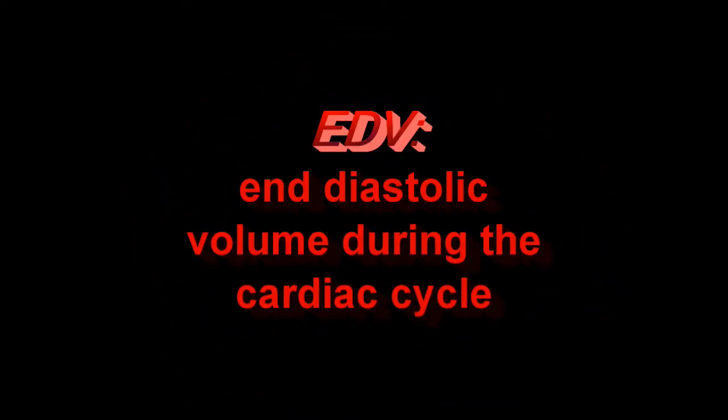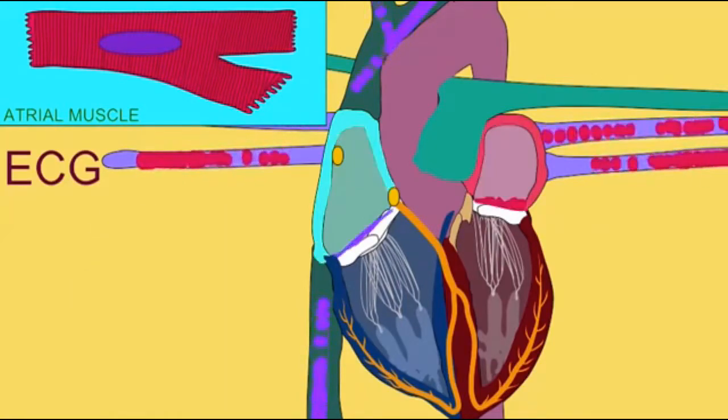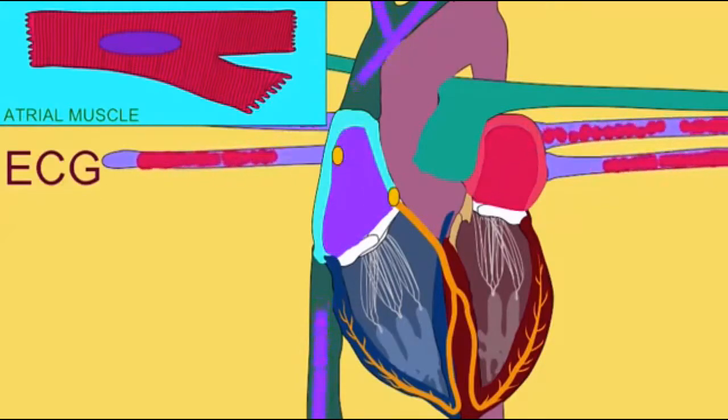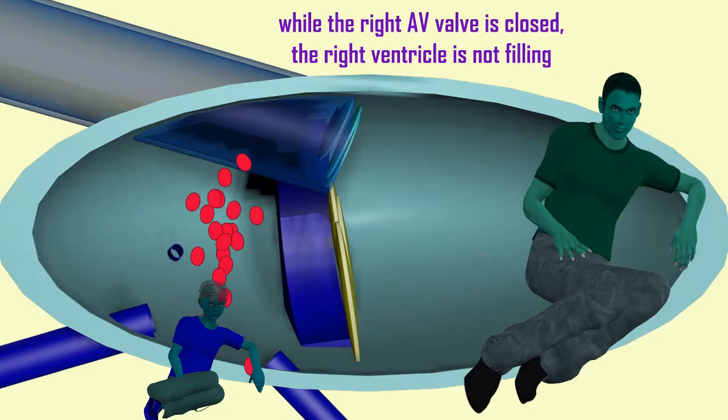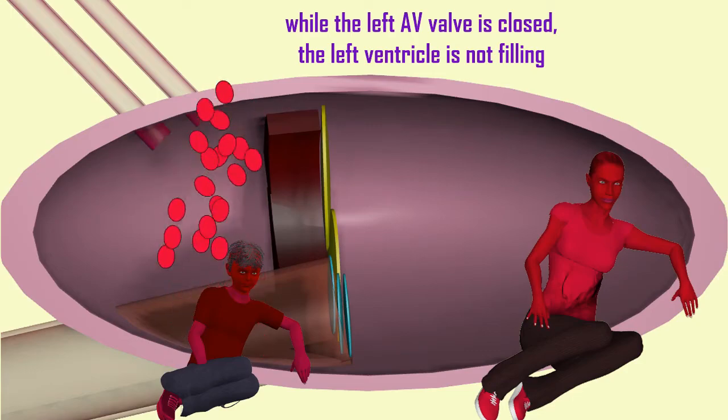When a cardiac cycle begins, all four chambers are in diastole and all four valves are closed. Because the AV valves are closed, no blood is entering the ventricles. The ventricles are not filling, so the right ventricle and the left ventricle are not increasing their volume while the left and right AV valves are closed.